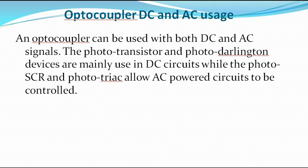Regarding opto-coupler DC and AC usage: just as explained before, the photo SCR and photo TRIAC are for AC, while the photo Darlington and phototransistor are for DC. An opto-coupler can be used with both DC and AC. The phototransistor and photo Darlington devices are mainly used in DC circuits, while the photo SCR and photo TRIAC allow AC power to be controlled.